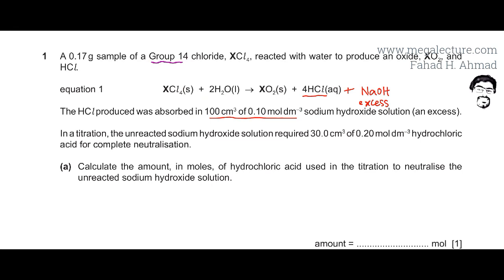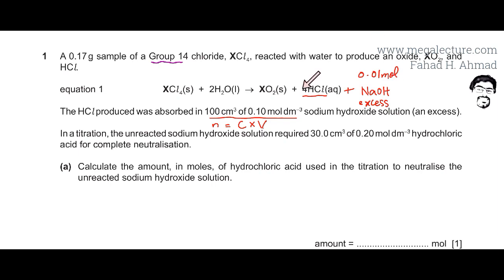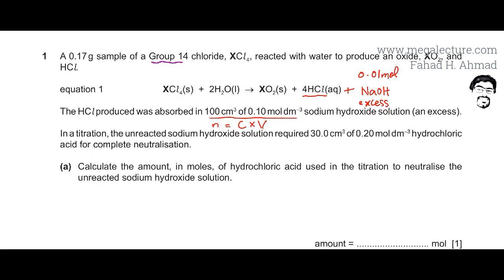Using the formula n = C × V (concentration multiplied by volume), where volume must be in dm³, so 100 cm³ is 0.1 dm³. The moles of NaOH added come out to be 0.01 moles. So you're reacting the HCl produced with 0.01 moles of NaOH, which is in excess — meaning some NaOH will be left over.